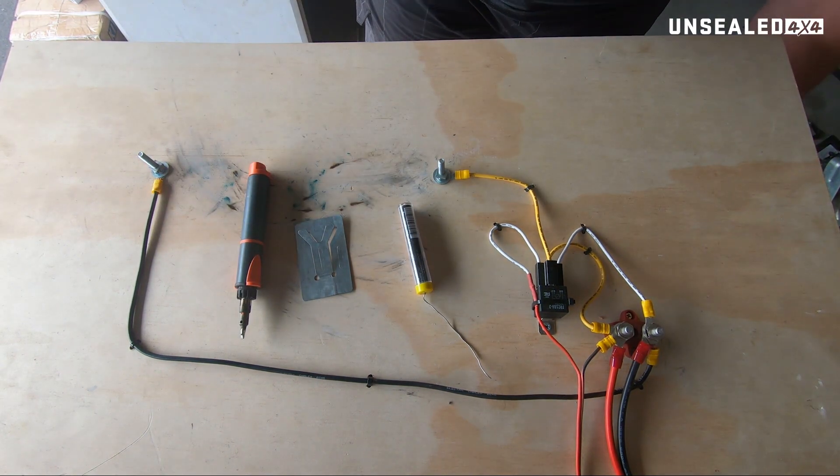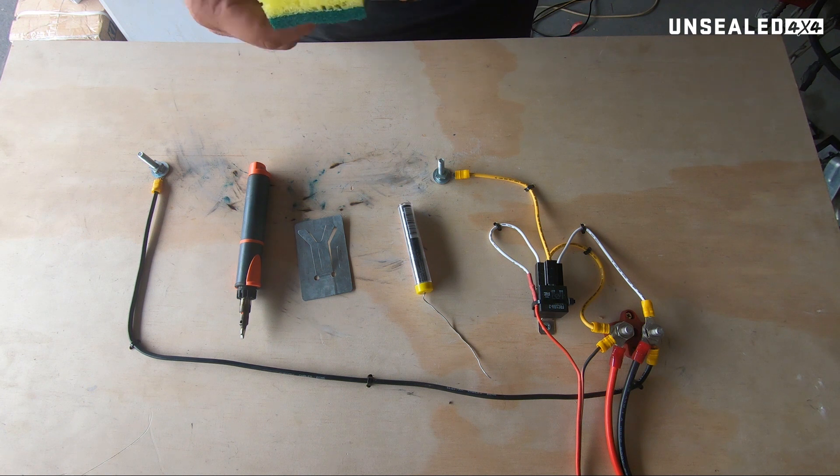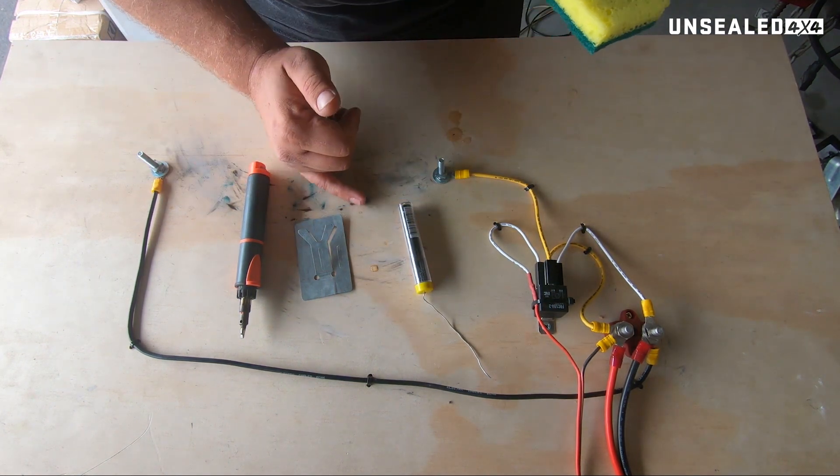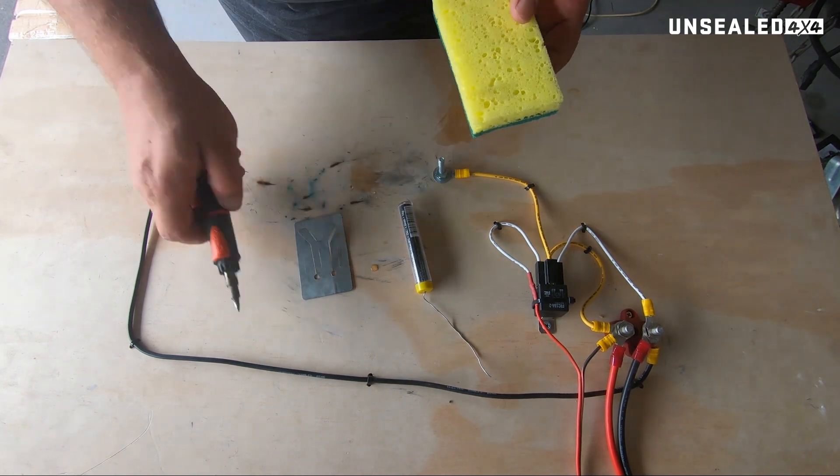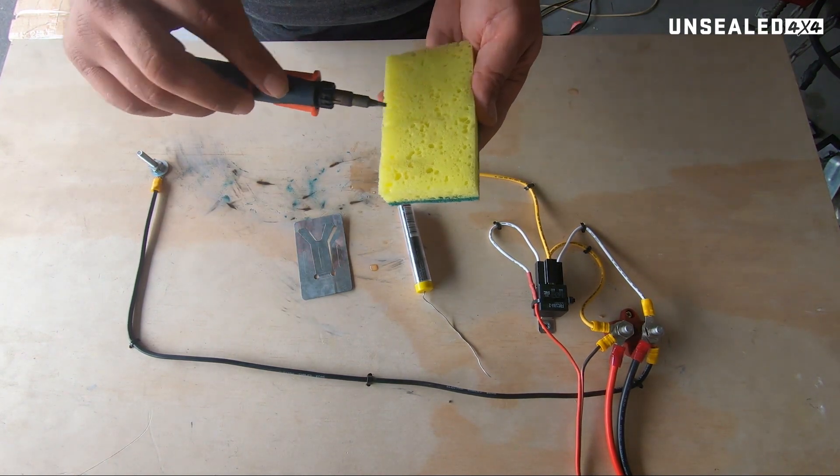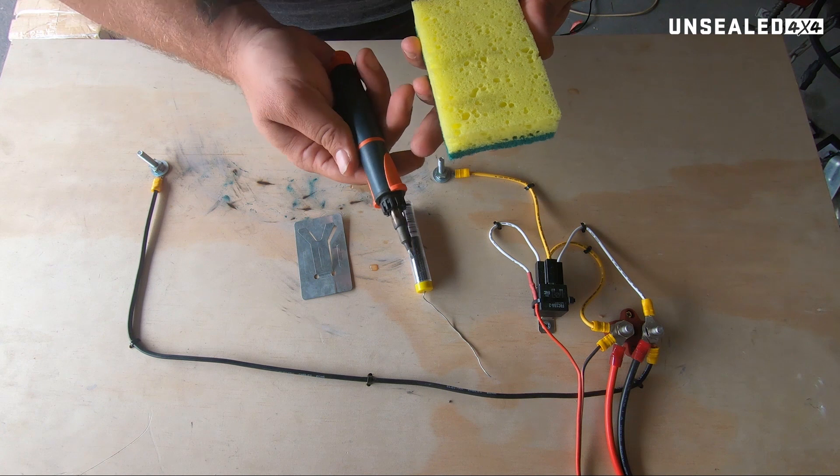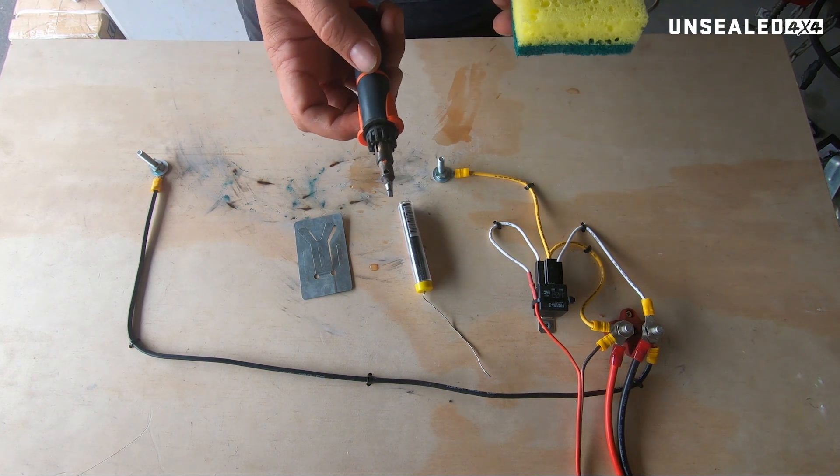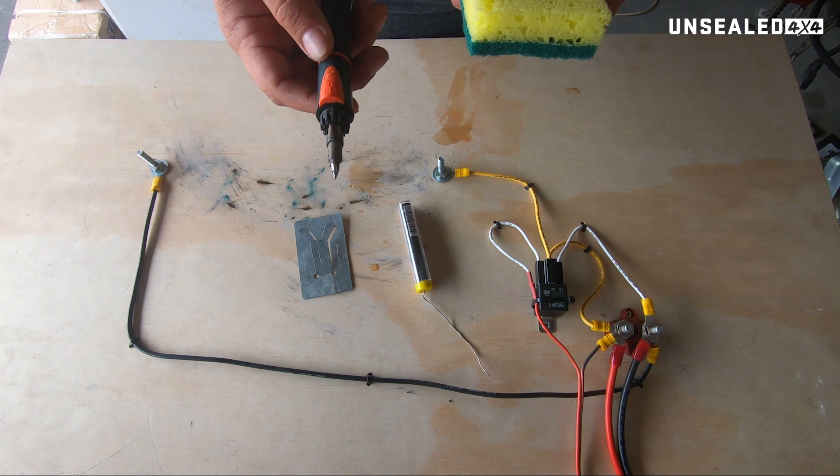Something worth having as well is a slightly damp sponge. What you want to do with that, besides drip water everywhere, is you can use a slightly damp sponge to clean off your tip so it's nice and clean. A dirty tip won't hold solder and won't solder very well either. You don't get much heat connection, heat connectivity.